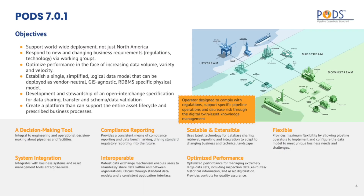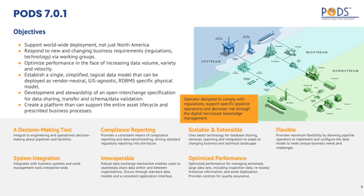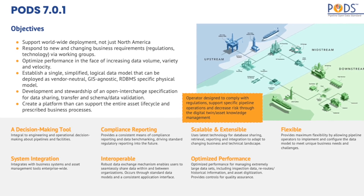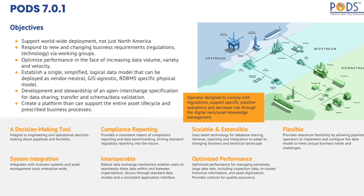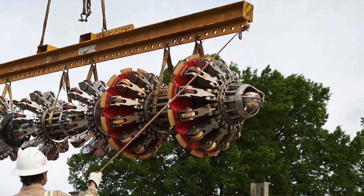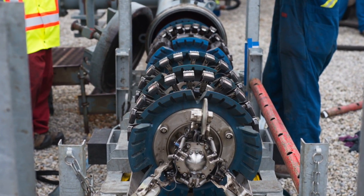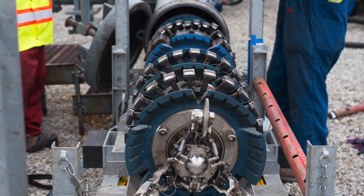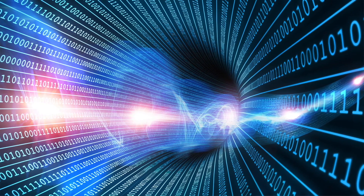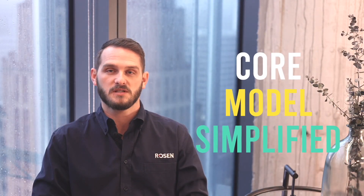There's a lot of data that pipeline operators must manage, so the PODS model structure is very big. With the rollout of PODS 7.0.1, the model has become more condensed and less complex, and future rollouts of PODS will continue to condense and simplify the model. To find anomalies in a pipe, companies run tools called smart pigs through the pipeline. The smart pig reports back the pipe anomaly and the location of the anomaly. The ILI tables were removed from the core PODS model and placed in a separate module, keeping the core model simplified.